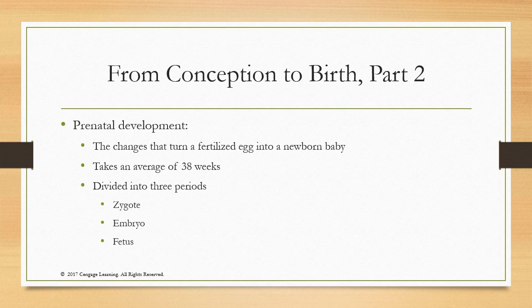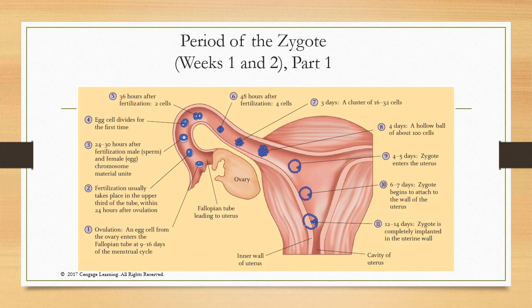Now we'll look at the first phase of prenatal development: the period of the zygote, which is weeks one and two of the 38-week gestational period. The period of the zygote spans 14 days. It begins with fertilization of the egg in the fallopian tube and ends with implantation of the fertilized egg in the wall of the uterus.